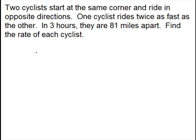All right, we have a rate, time, distance problem, also called uniform motion. So let's read through it first. Two cyclists start at the same corner and ride in opposite directions. One cyclist rides twice as fast as the other. In three hours, they are 81 miles apart. Find the rate of each cyclist.